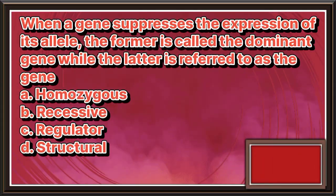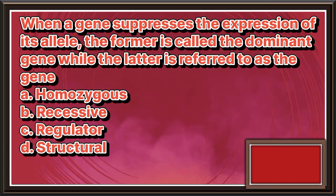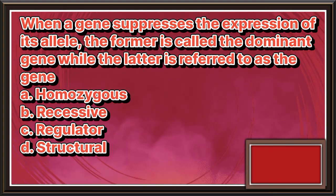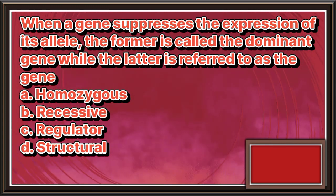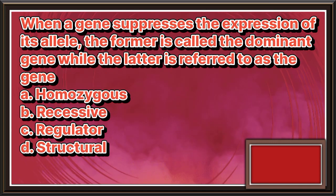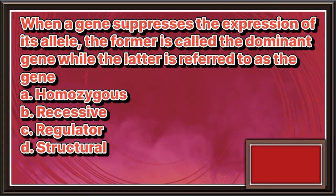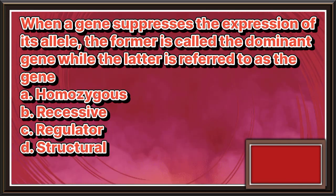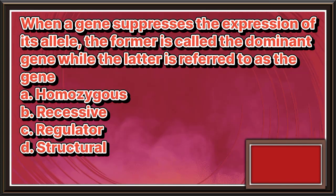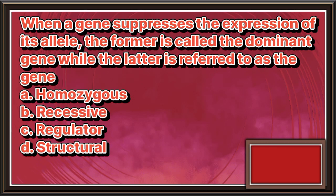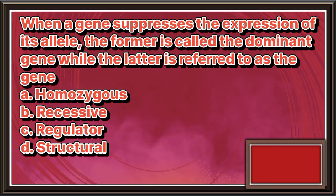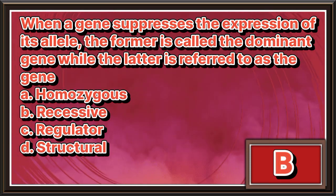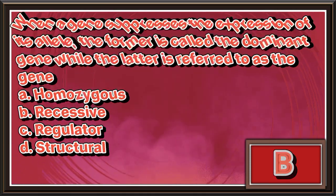When a gene suppresses the expression of its allele, the former is called the dominant gene, while the latter is referred to as the _____ gene. A. Homozygous. B. Recessive. C. Regulator. D. Structural. The answer is letter B.